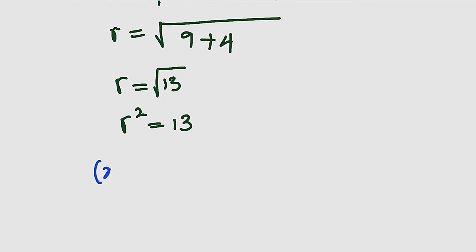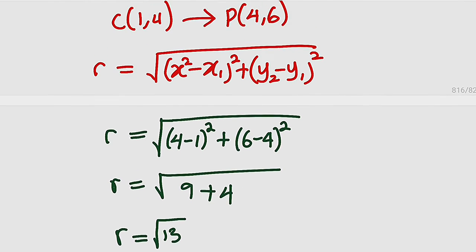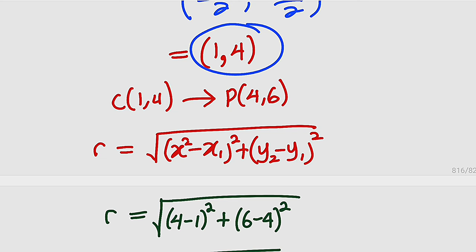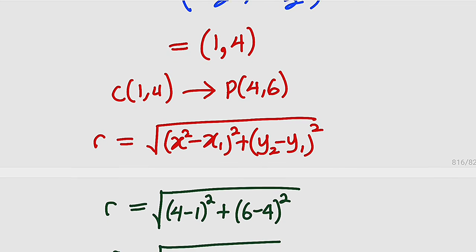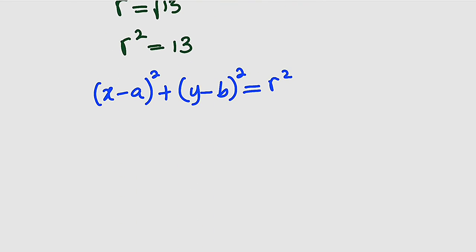Now we are free to form that equation. The equation, remember, is (x-a)² + (y-b)² = r². All you need to do is substitute a, b, and r². What is a and b? a and b are just the center of that circle, which has the coordinates (1,4). 1 for a and 4 for b. Therefore, this equation becomes (x-1)² + (y-4)² = 13.